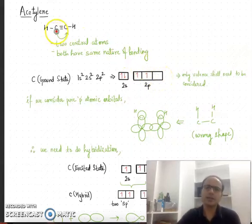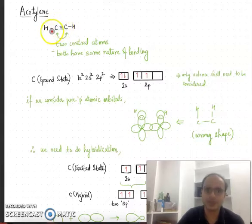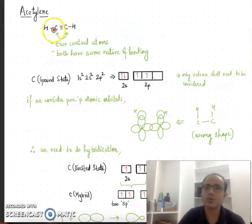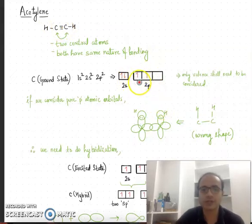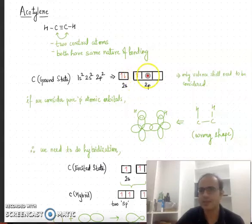Looking at the central carbon atom, it is bonded to two atoms — one hydrogen and one carbon. So it requires only two atomic orbitals with unpaired electrons for forming bonds with these two atoms. In the ground state electronic configuration of carbon, there are two orbitals available with single electrons.